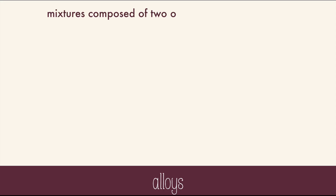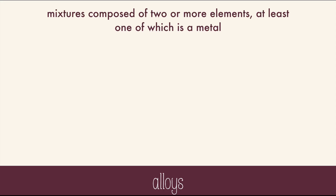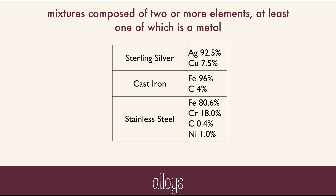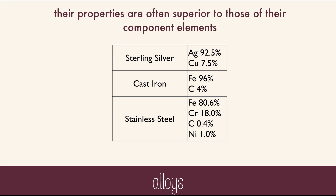Most metals you use on a daily basis aren't actually a pure element — they're an alloy. Alloys are mixtures composed of two or more elements, where at least one of those elements is a metal. Sterling silver, cast iron, and stainless steel are all common alloys. By mixing these elements together, you get better properties: better malleability, strength, or resistance to rusting. Alloys are important because their properties are often superior to those of their component elements.